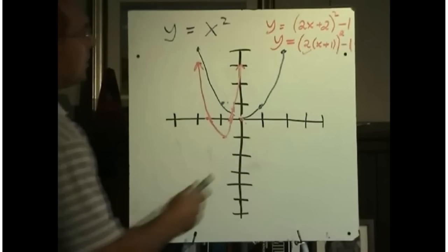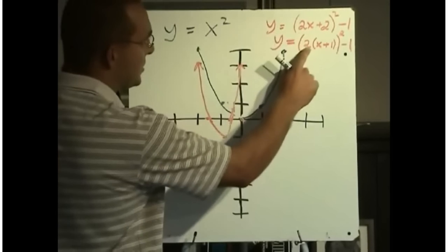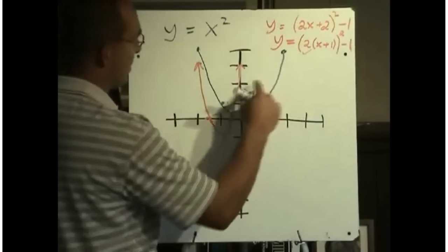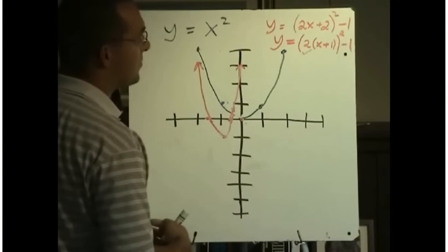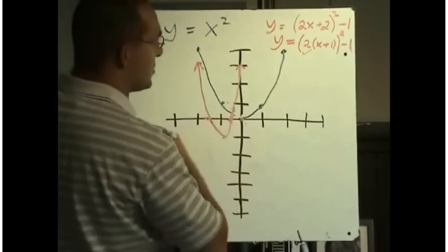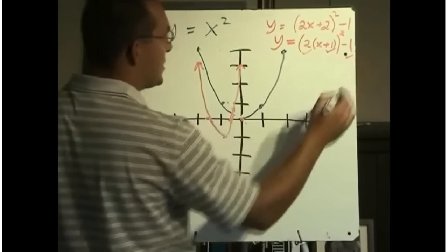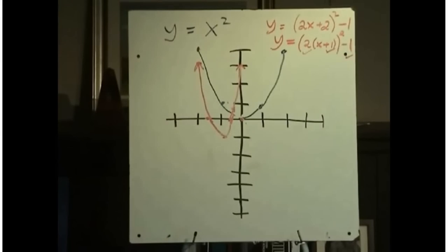So a couple things to remember. Make sure if there's a coefficient of x, it gets factored out. And then when it comes to doing some sketching of these things, just do one or two transformations at a time until you can check off that you've done all of the changes to the function.